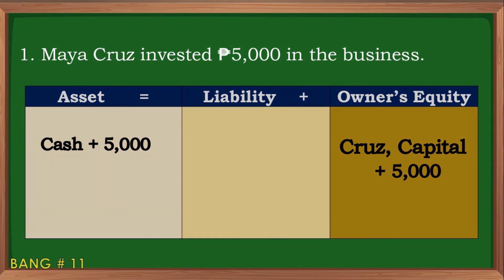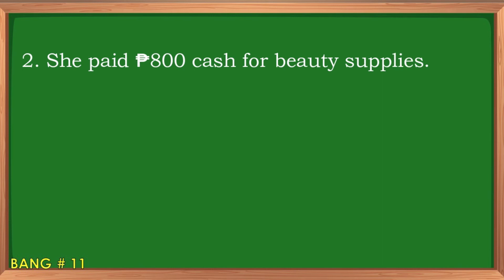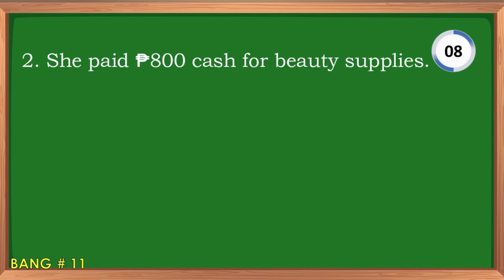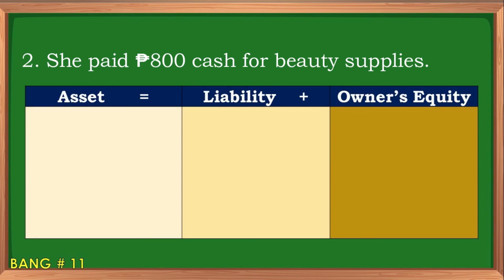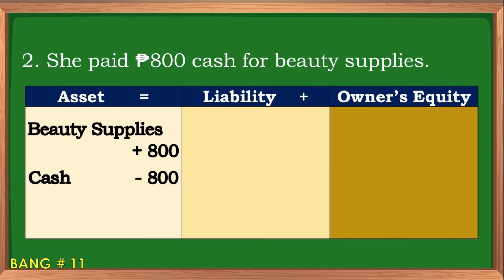Number two: She paid 800 pesos cash for beauty supplies. The answer is: increase in beauty supplies, 800 pesos, and decrease in cash, 800 pesos.